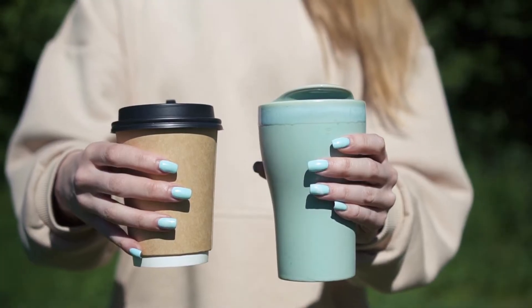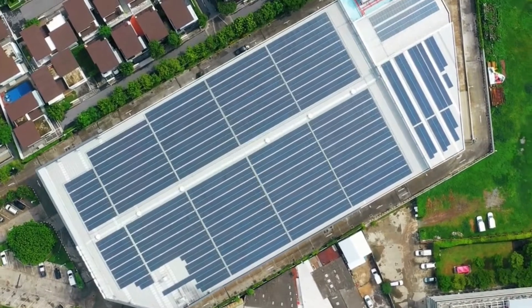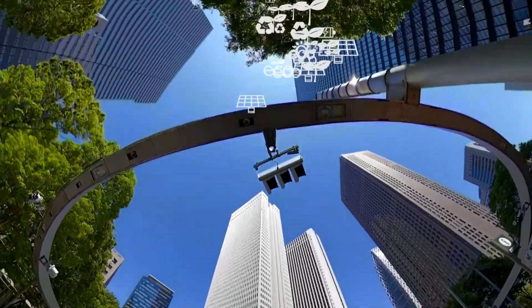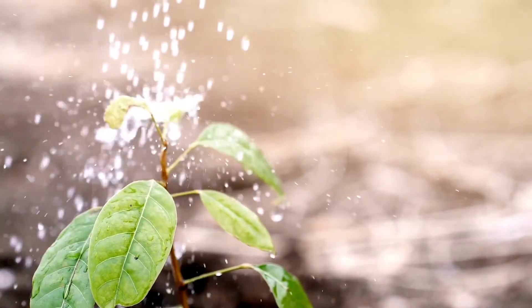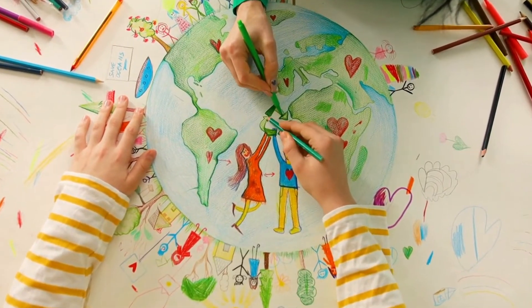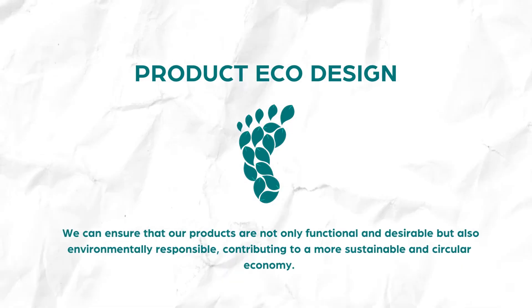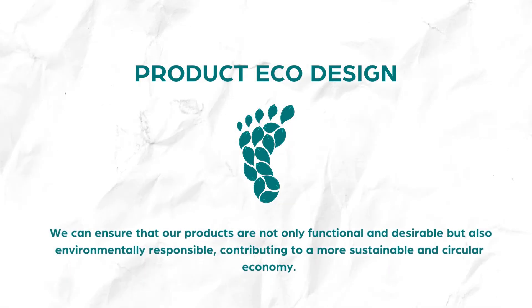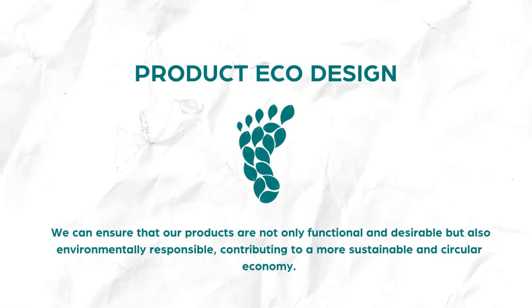In conclusion, eco design is a powerful tool that allows us to reimagine how we create and interact with our surroundings. Whether applied to product design or manufacturing, eco design principles enable us to shape a more sustainable future. By embracing these principles, we can minimize our environmental impact, preserve valuable resources, and create healthy and aesthetically pleasing spaces for future generations. Through product eco design, we can ensure that our products are not only functional and desirable but also environmentally responsible, contributing to a more sustainable and circular economy.